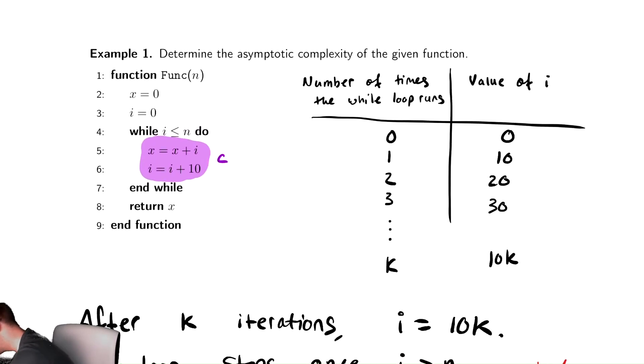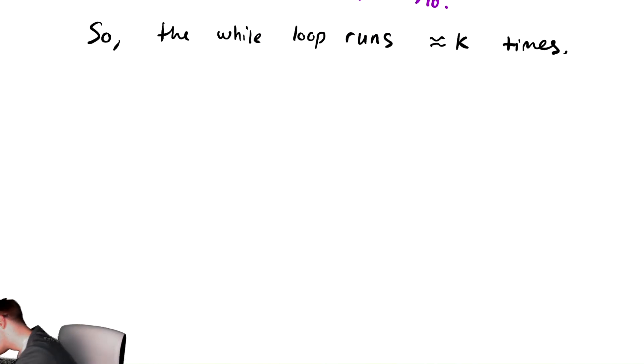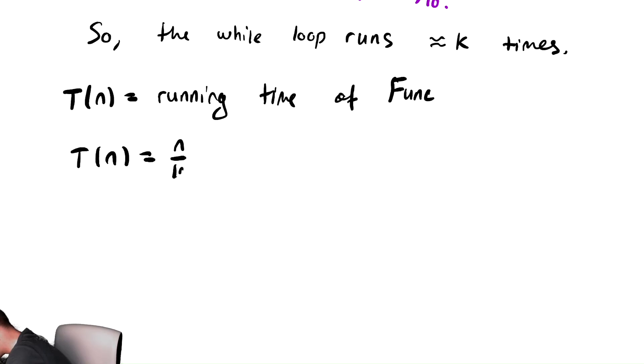So if this code is run approximately k times, then the running time would just be k times the cost. Because that tells me how many times does it execute. And I'm trying to figure out the total cost. Well, I'm just gonna multiply it by the cost, of course. So the total running time, t of n, the running time of func is equal to k, which was n divided by 10, times the cost of each run, which is c. Thus, t of n is in theta of n.